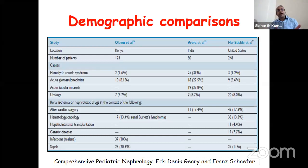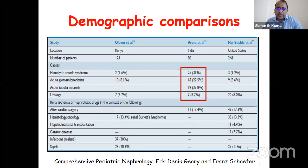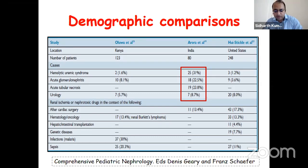There are demographic comparisons. In Kenya, causes are more infections and sepsis. In the United States and the developed world, post-cardiac surgery, post-bone marrow transplantation, and post-transplant are more common causes. In India, we see hemolytic uremic syndrome, acute glomerulonephritis, and post-diarrheal acute tubular necrosis as common causes of AKI.